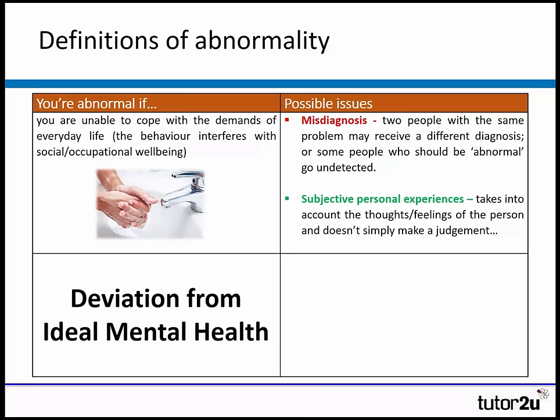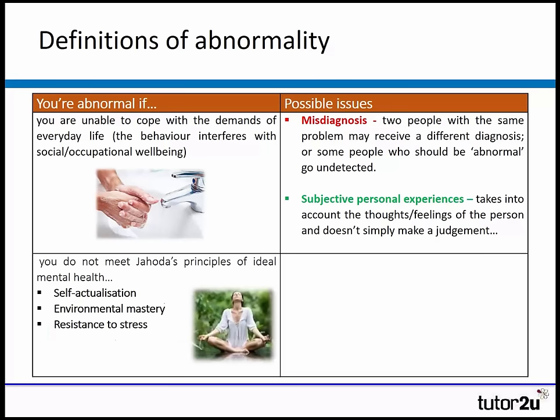The final definition is deviation from ideal mental health, which says you're abnormal if you don't meet one of Jahoda's principles for ideal mental health. There are six of these — I don't advise learning all six; I'd remember a couple of them. One is self-actualisation, a second is environmental mastery, and we need to be resistant to stress.